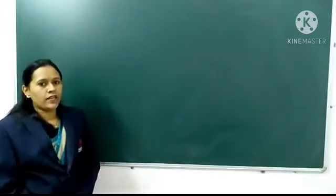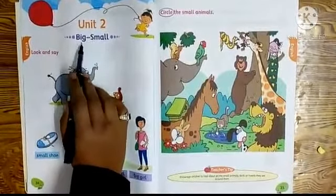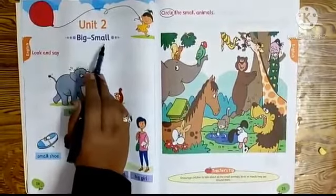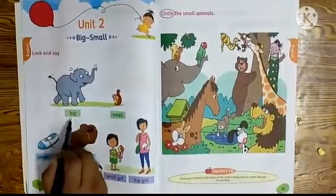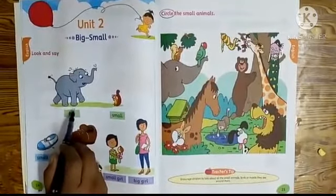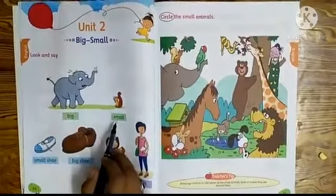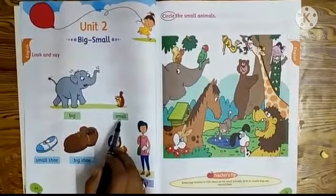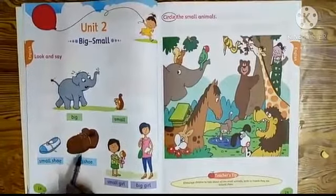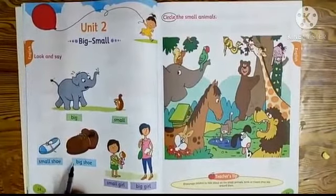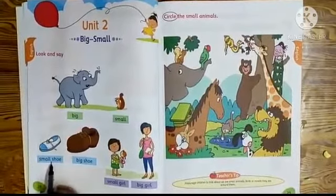Okay students. Now see here. You need a second. Big and small — look and say. This is a big elephant. And this one is a small squirrel. Then next. Here given two types of shoes. One is a big shoe. And second is a small shoe.